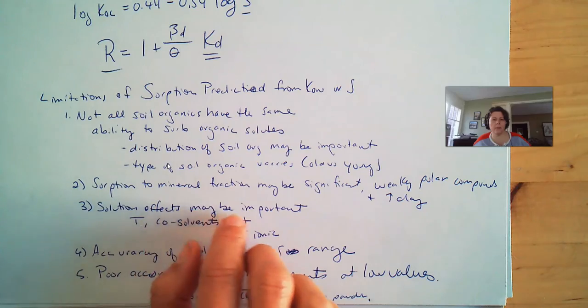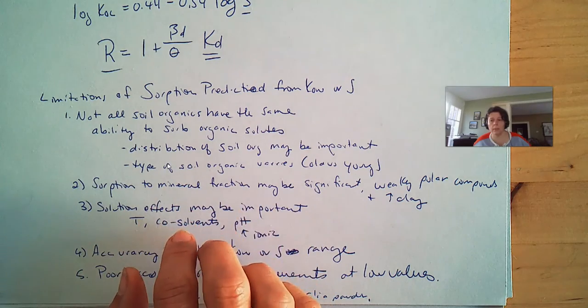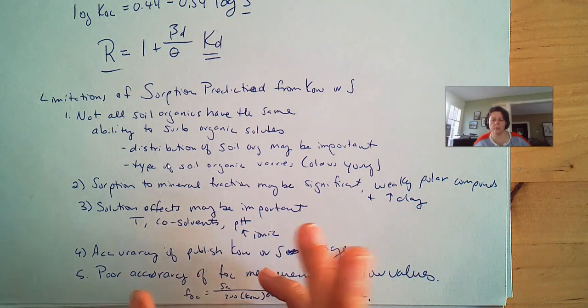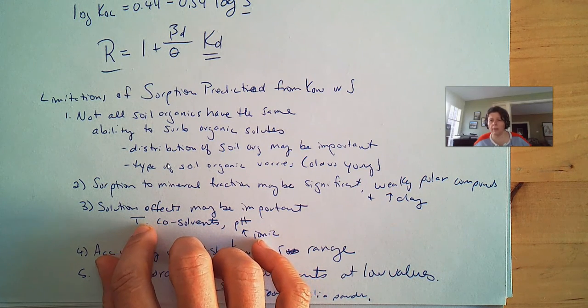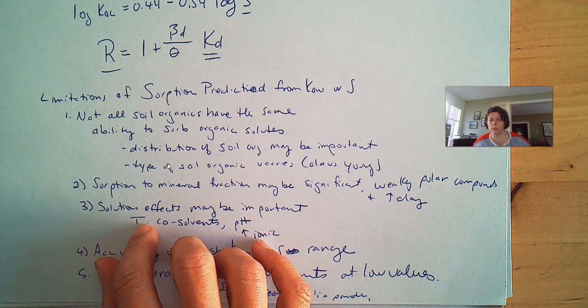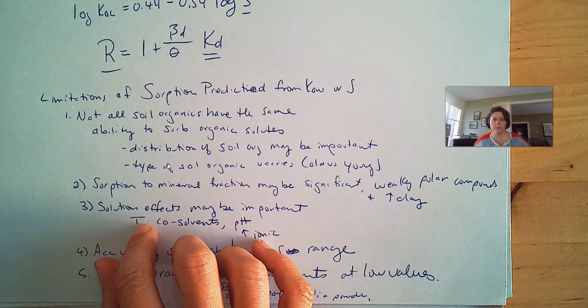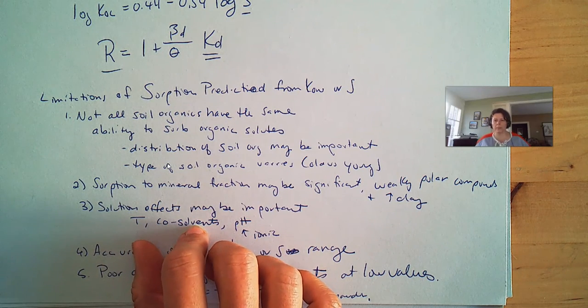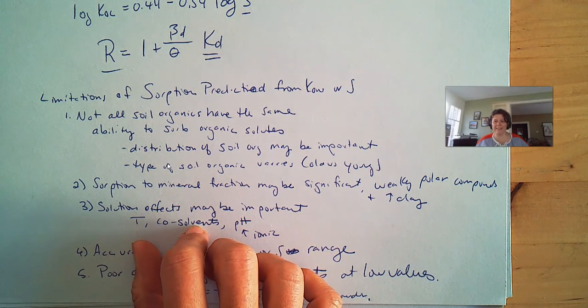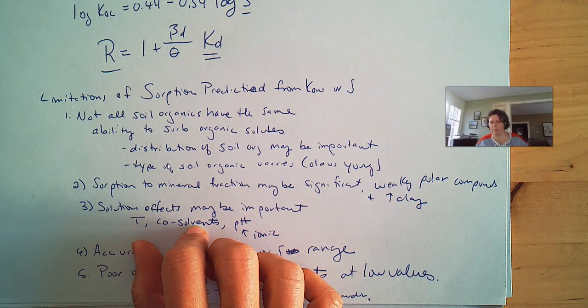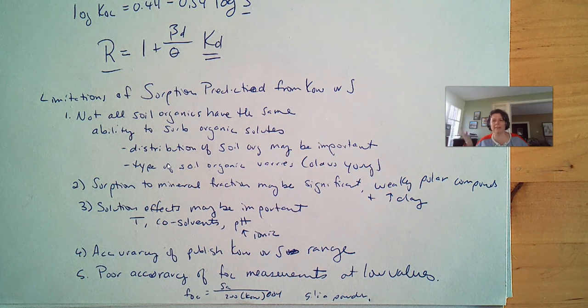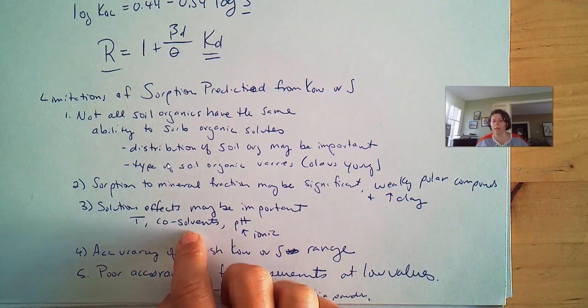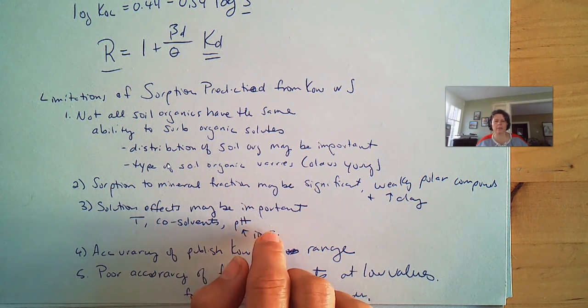The solute effects could be important. We do these isothermic reactions, batch experiments with temperature always the same. What happens if there's variation in temperature? We can actually change some of the solubilities in the system. Co-solvents - if we mix things together, we might be able to dissolve something. So if we have a mix of different organic compounds, which is actually more common than just having a single contaminant, we can have some co-solvent effects.